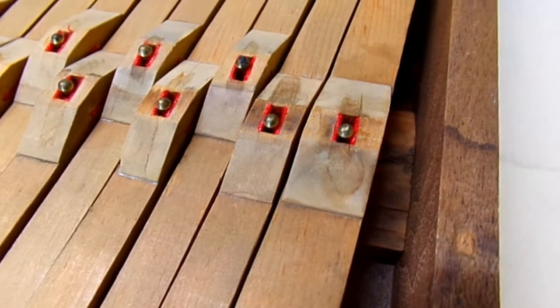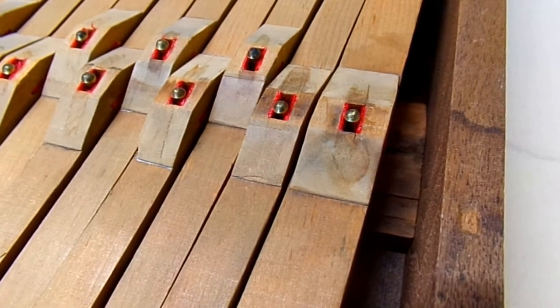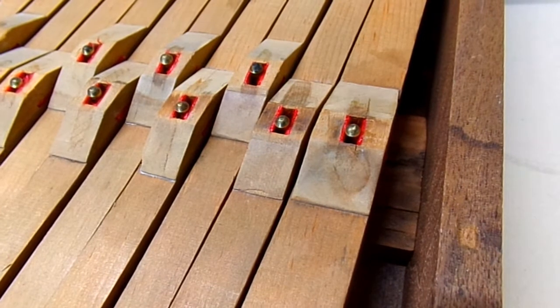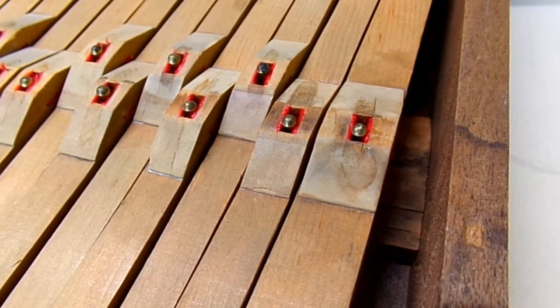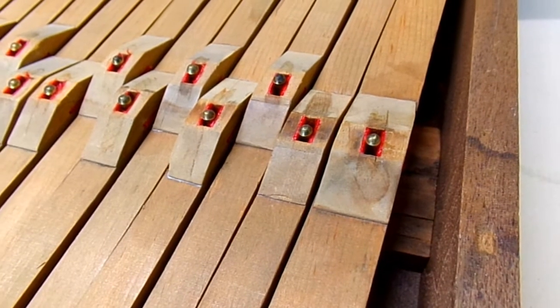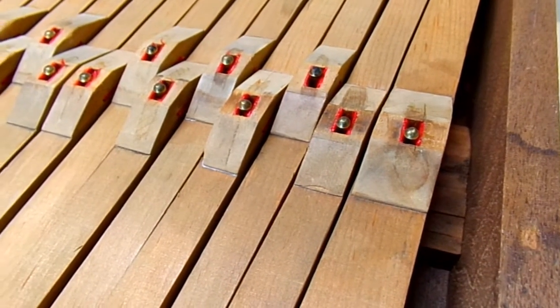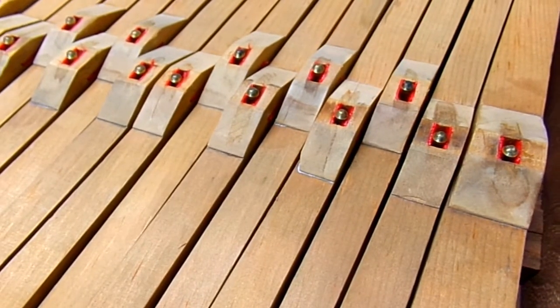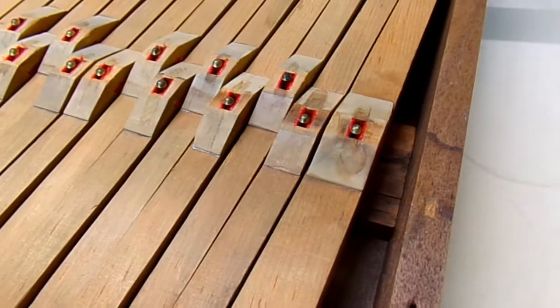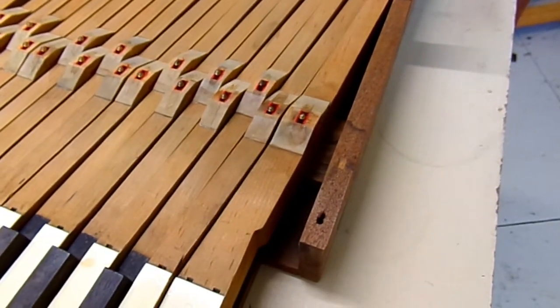And here's the balance rail. Basically the same theory, only this one slides sideways. And it keeps the key steady side to side. And that's what's involved in bushing the keys.